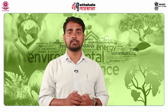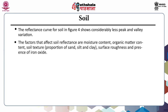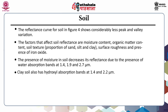Let us talk about the spectral signature of soil. The reflectance curve for soil shows considerably less peak and valley variation. The factors that affect soil reflectance are moisture content, organic matter content, soil texture (including proportion of sand, silt and clay), surface roughness and presence of iron oxide. The presence of moisture in soil decreases its reflectance due to water absorption bands at 1.4, 1.9 and 2.7 micrometer. Clay soil also has a hydroxyl absorption band at 1.4 and 2.2 micrometer.